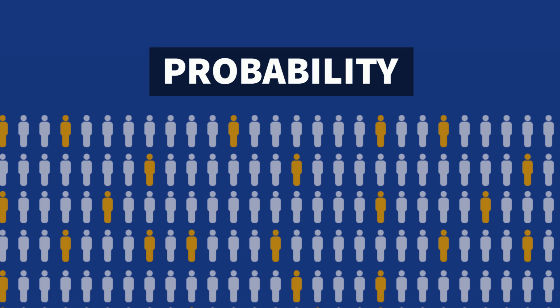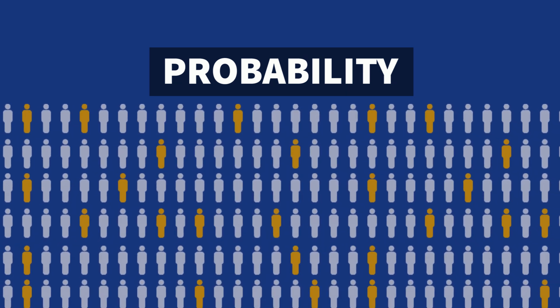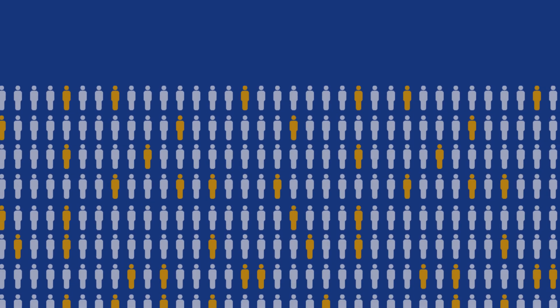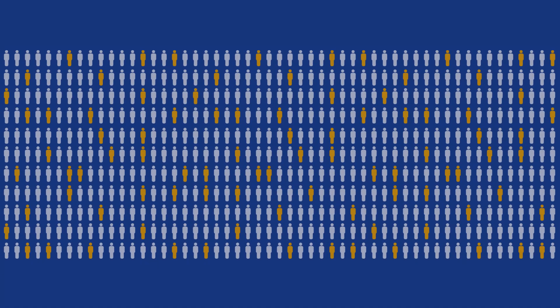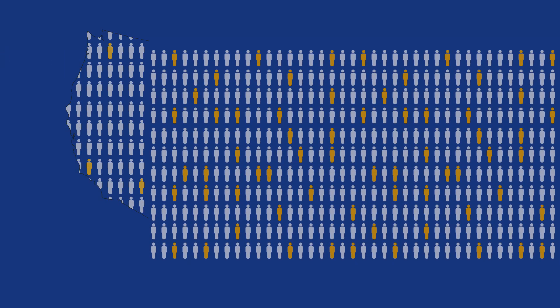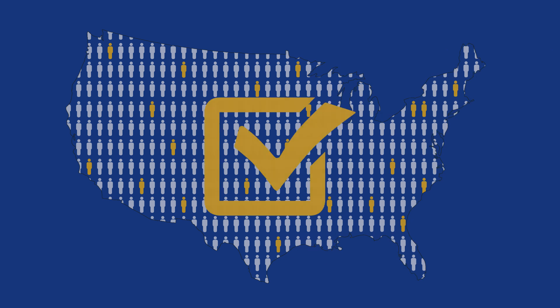Probability sampling, on the other hand, uses some type of random selection. When you want precise, accurate estimates of a large population, then a probability sample is what is needed. Want to know who's going to win an upcoming election? Then probability sampling is likely to be the most accurate method to find out the answer.